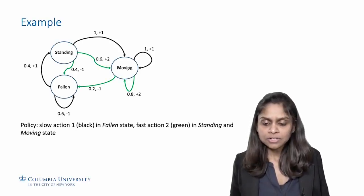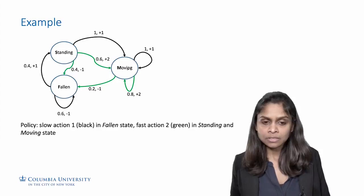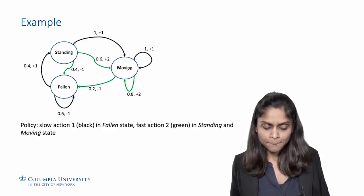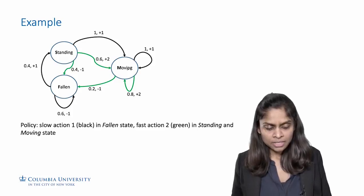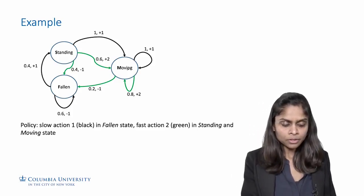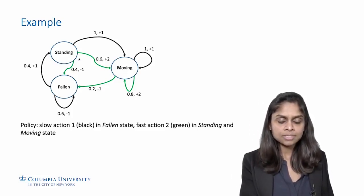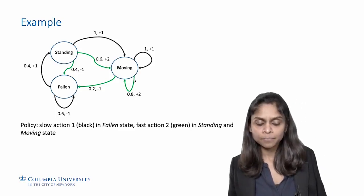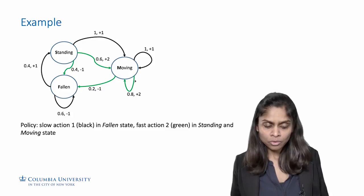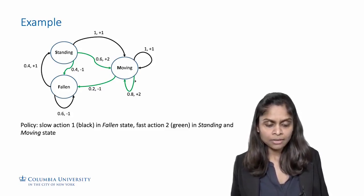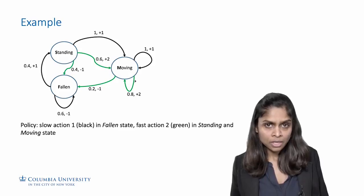For illustration, let's consider a simple example of an MDP for a robot trying to walk. In this formulation, we have three states of the robot: a fallen state, a standing state, and a moving state. There are two actions available: a slow live movement action, which we will call a slow action, and a fast, aggressive live movement, which we will call a fast action.